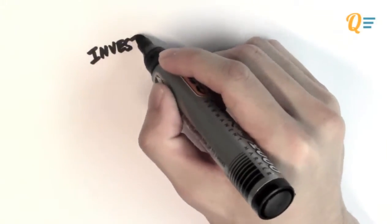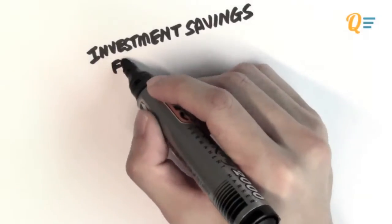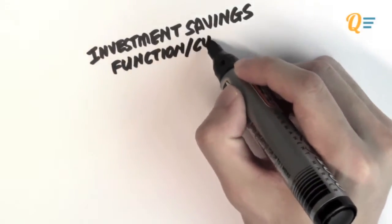Hi everyone! In today's video, we will be talking about the investment savings equilibrium. It is also known as your IS function or your IS curve.